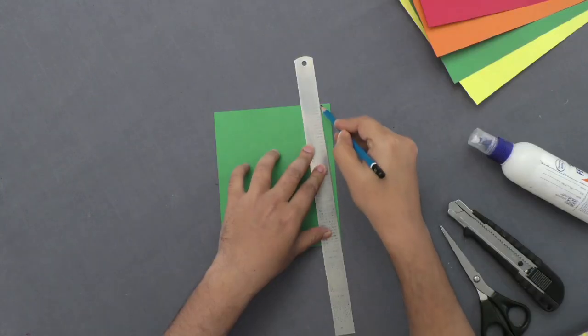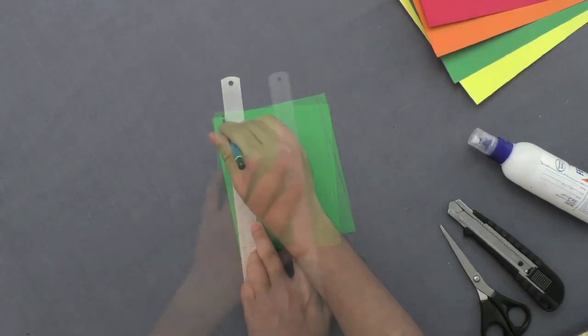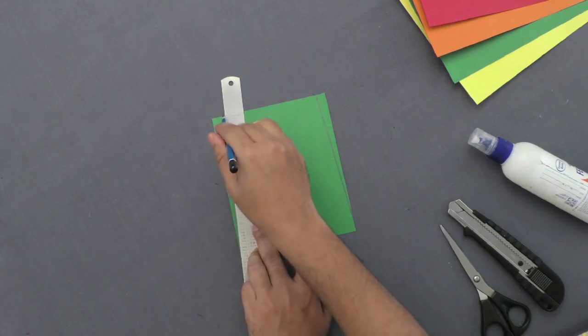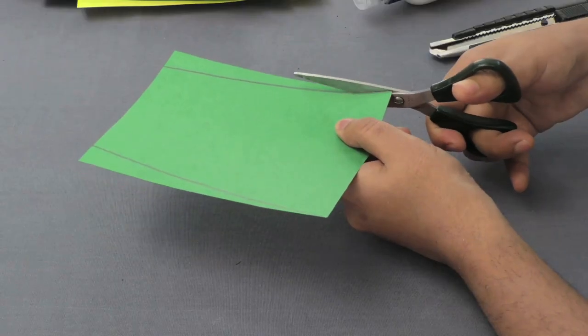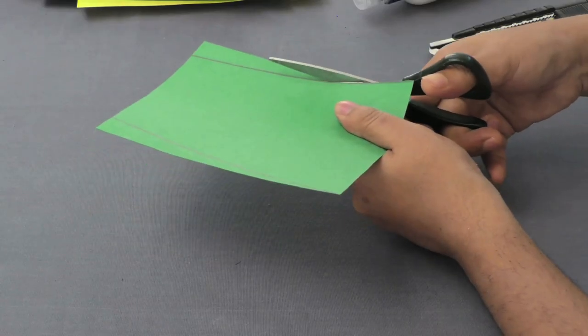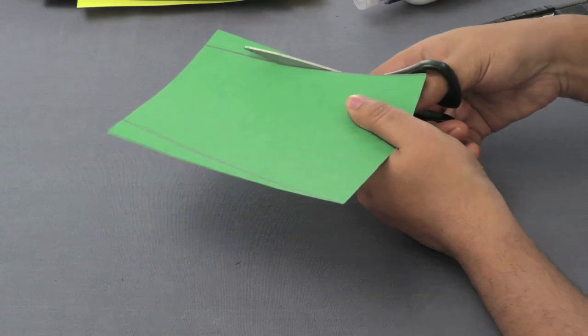Begin by drawing angular lines on a chart paper using scale and pencil. Now, cut out the marked edges to make a trapezium shape.